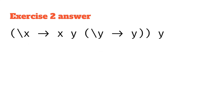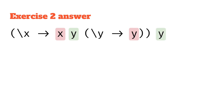Another, slightly more complicated example. We've got four variables. The x at the beginning is obviously bound because there's a function abstraction directly above it. The y directly after it is not bound, because there's no function abstraction above it that has bound y. The next y is bound, because there is a function abstraction above it that has bound y. And the final y is completely out of everything, with no function abstractions on top of it, so it is free as well.